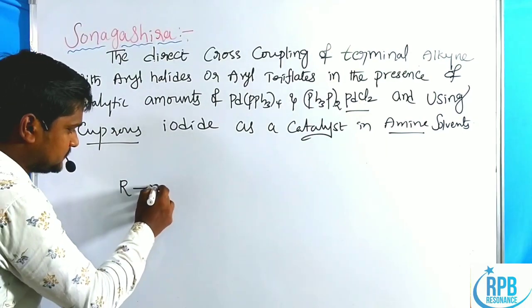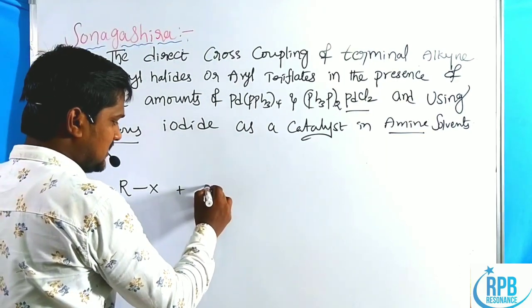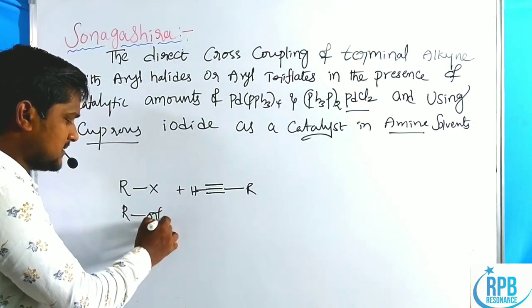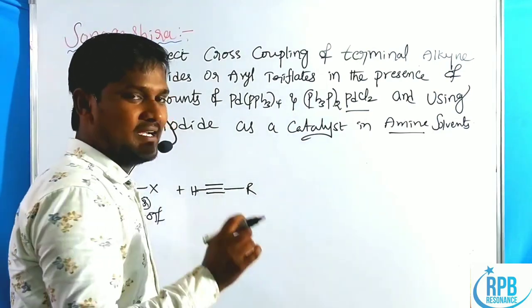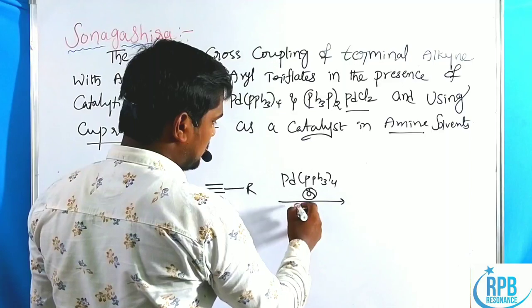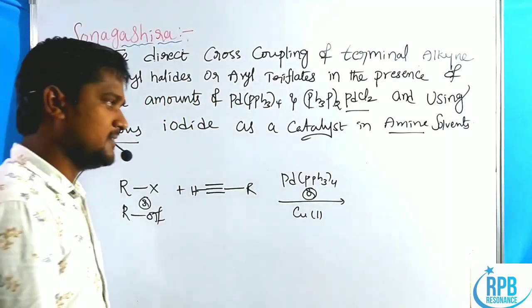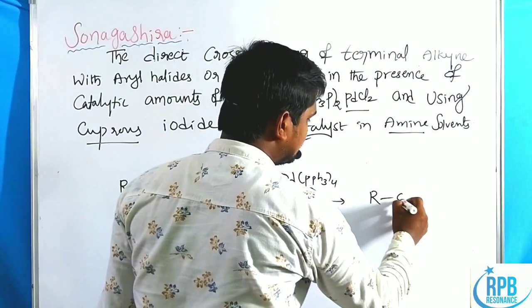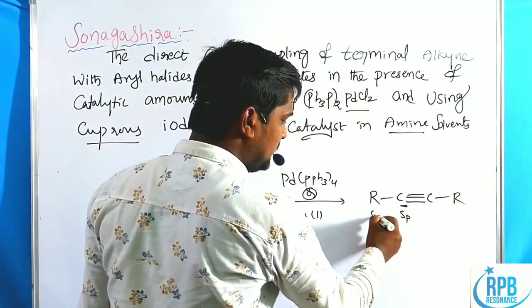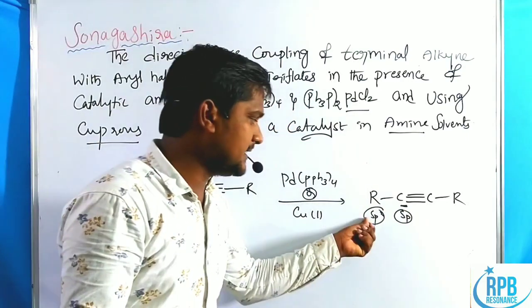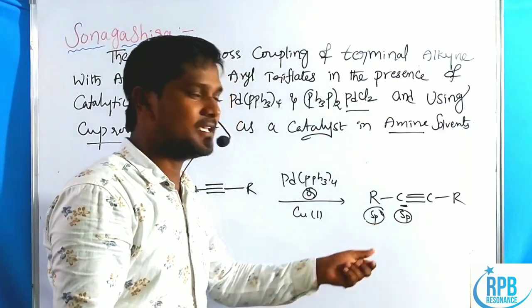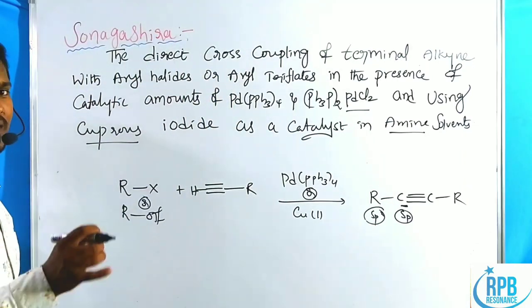The general representation of Sonogashira: alkyl halide is treated with a terminal alkyne. Alkyl halides, alkyl triflates, or tosylates — it doesn't matter — are treated with terminal alkynes in the presence of palladium catalyst, Pd(PPh3)4, and copper iodide as co-catalyst. This gives a new C-C single bond at SP and SP3 carbon. In general reactions, SP3–SP3 bond is formed; in Heck reaction, SP2–SP bond is formed; here, SP–SP3 new C-C single bond is formed.